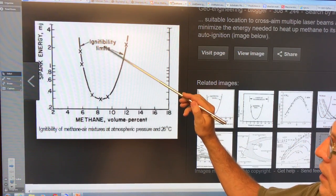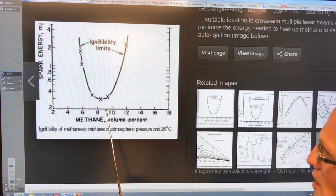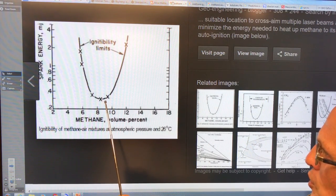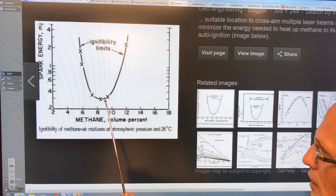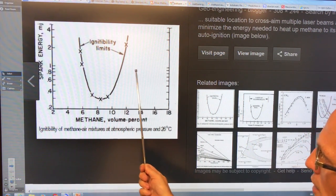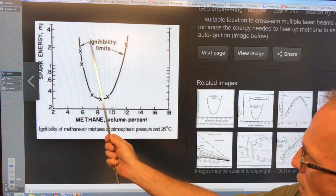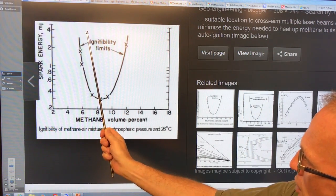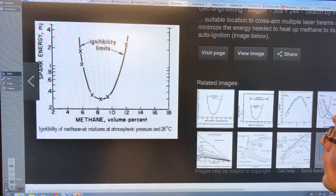We have certain ignitability limits for methane. So about eight and a half percent of methane by volume will ignite very easily. And then as you go to lower concentrations or higher concentrations, it takes more energy to ignite the methane. And there's certain limits if you're too low or too high, the methane won't ignite at all.